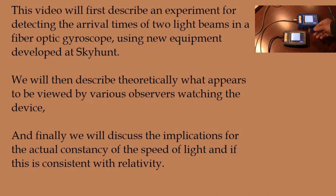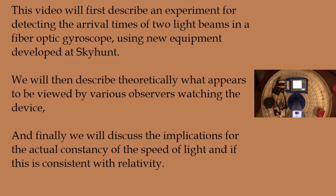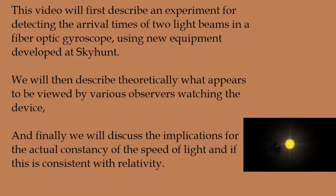This video will describe an experiment for detecting the arrival times of two light beams in a fiber optic gyroscope using new equipment developed at SkyHunt. We will then describe theoretically what appears to be viewed by various observers watching the device, and finally, we will discuss the implications for the actual constancy of the speed of light and if this is consistent with relativity.